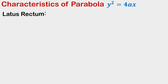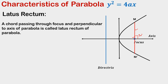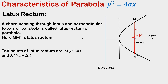For the latus rectum of a standard parabola, take the parabola, its focus, directrix, axis, and y-axis. Take a chord that passes through the focus and is perpendicular to the axis of the parabola. This chord MM' is called the latus rectum of the parabola. A chord passing through the focus and perpendicular to the axis is called the latus rectum.